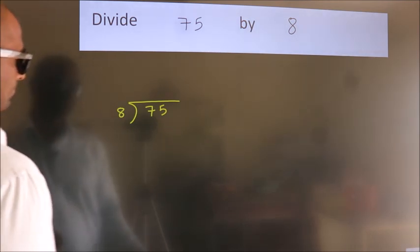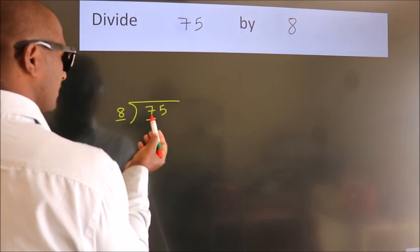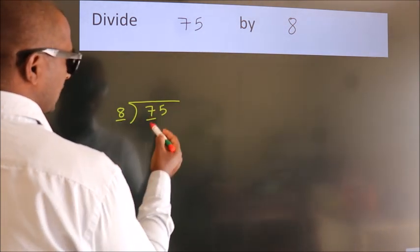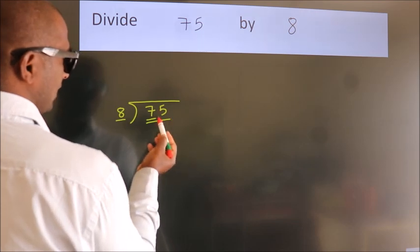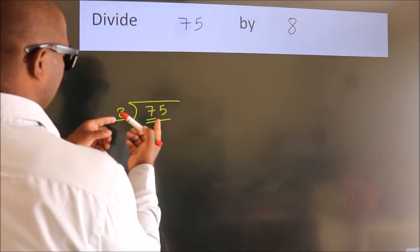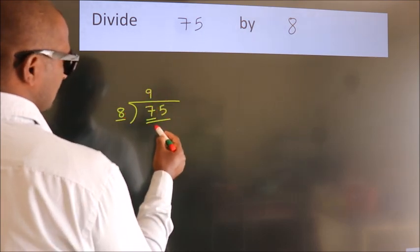Next. Here we have 7. Here 8. 7 is smaller than 8, so we should take 2 numbers: 75. A number close to 75 in the 8 table is 8 nines, 72.